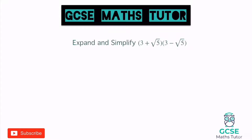I'm going to treat this exactly the way I would with normal double brackets in algebra. The process I use is I first times the first two numbers together, so 3 times 3, and write them in a nice logical order — that's 9. Then going from the 3 to the root 5 at the end, being careful of the symbol — it's negative root 5. So it's 3 times negative root 5, which is negative 3 root 5.